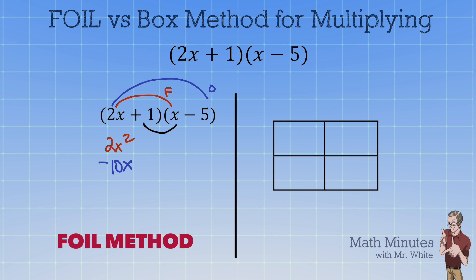Now we're going to multiply the inside which is the +1 times the +1x, and we get +1x. And then finally the L in FOIL is where you take these two last terms, the +1 and the -5, you multiply them together and you get -5.